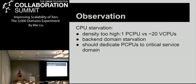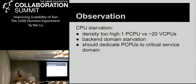Another observation is CPU starvation. With 3,000 domains running on a single host, we have a density of about one physical CPU to 20 virtual CPUs. If we don't dedicate several physical CPUs to critical service domains, there's a very high chance of destroying the whole system. I did make that mistake — several domains spinning up consuming too much vCPU, causing DOM0 to starve and the whole system to become unusable.